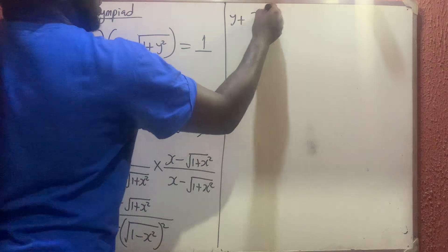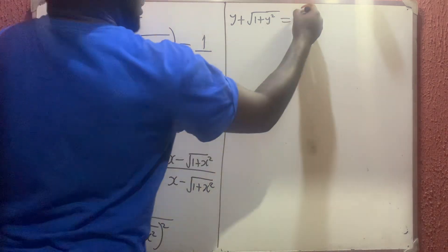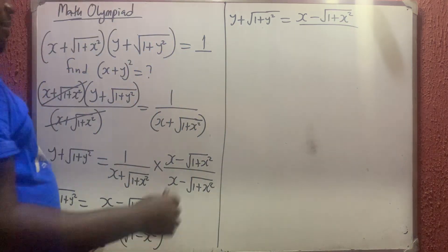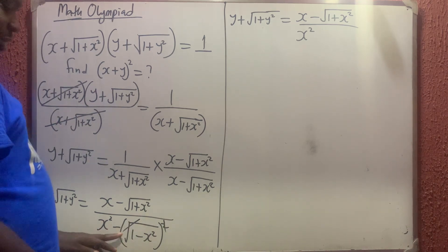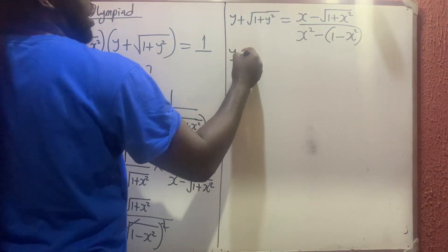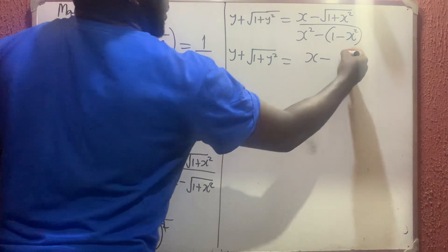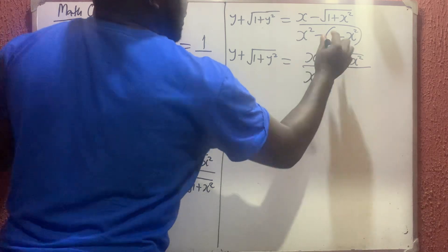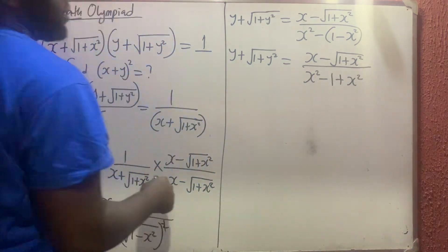So y plus the square root of 1 plus y squared equals x minus the square root of 1 plus x squared, all over x squared minus (1 plus x squared). The minus times 1 plus x squared gives us: x squared minus 1 minus x squared, which simplifies. We have x squared here, and this gives minus 1, and this gives plus x squared.